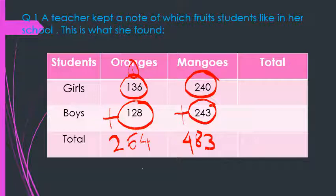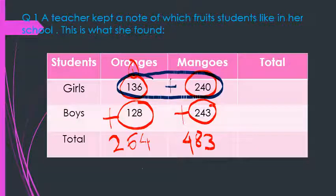Now, altogether how many students are there in the school? First of all, we need to find out how many girls there are. So 136 and 240 — when we add both, we get the total number of girls. 6 plus 0 is 6, 3 plus 4 is 7, and 1 plus 2 is 3, giving 376 girls.